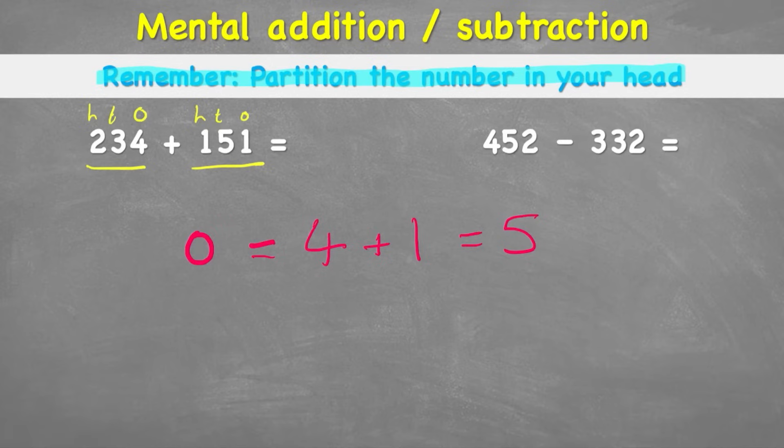Then I'd look at my tens and I would remember that 234 had 3 tens and 151 had 5. And therefore, 3 add 5 equals 8 tens.